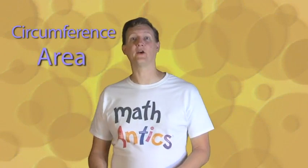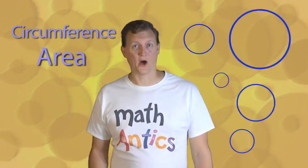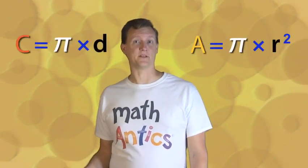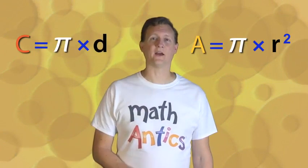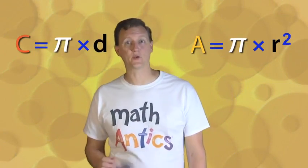Alright, so now you know how to find the circumference and the area of any circle. All you need to do is remember the formulas. Circumference equals pi times diameter and area equals pi times radius squared. But it's really important to practice using these formulas for yourself. So be sure to try some of the exercise problems. That's the way to really learn math. Thanks for watching Math Antics and I'll see you next time.